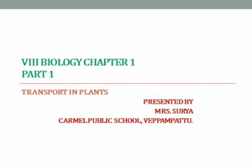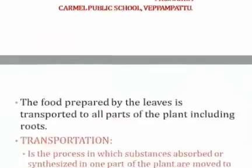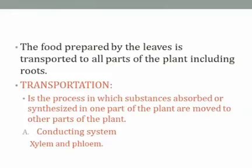Let us learn about transportation in this video. We know that plants can prepare their food by a process called photosynthesis. For this process, plants require carbon dioxide and water — this is a basic thing we have been studying from our lower classes. When we hear the word photosynthesis, we immediately think: carbon dioxide plus water gives glucose plus oxygen.